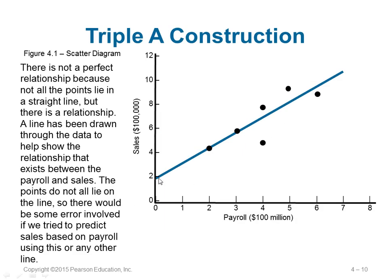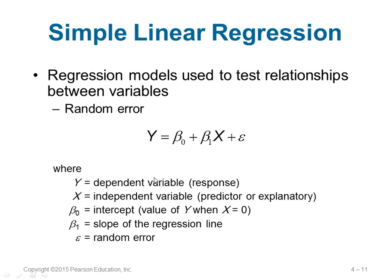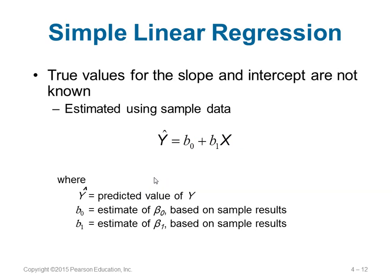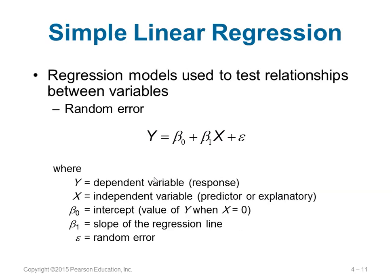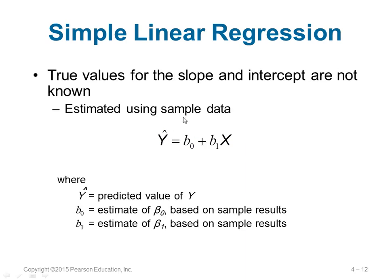Here you can see β0: if x is 0, y has some value. If y is also equal to 0, then β0 will not be there. This is the true representation. If you want to find the estimate, it is represented as y-cap or y-caret: ŷ = b0 + b1x. Y-cap is the predicted value of y. b0 is the estimate of β0 and b1 is the estimate of β1.